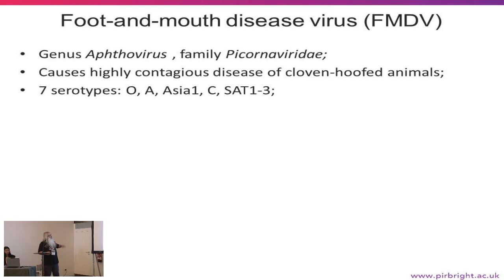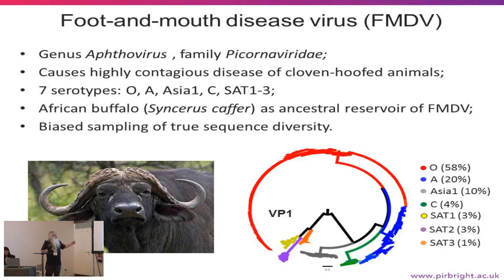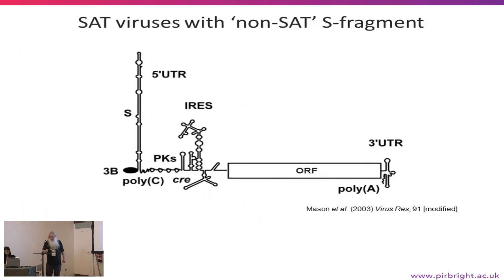The African buffalo, called the ancestral reservoir of FMD, are probably the origin of FMD. If we look at the sampling, or at least the sequences available on GenBank, we have a tree here showing very small numbers of SAT virus sequences available. Part of the idea of this project is to increase that.